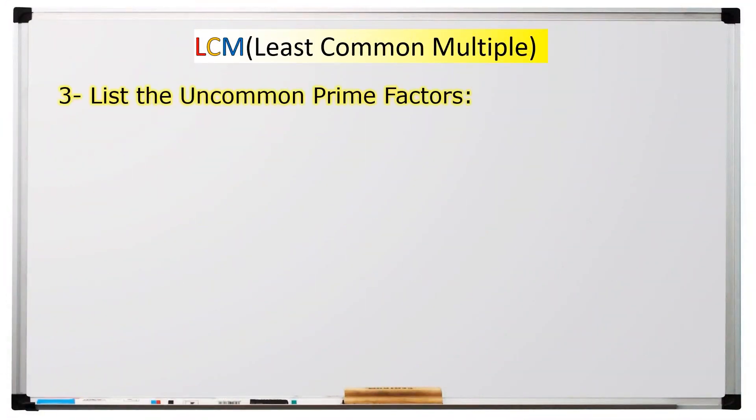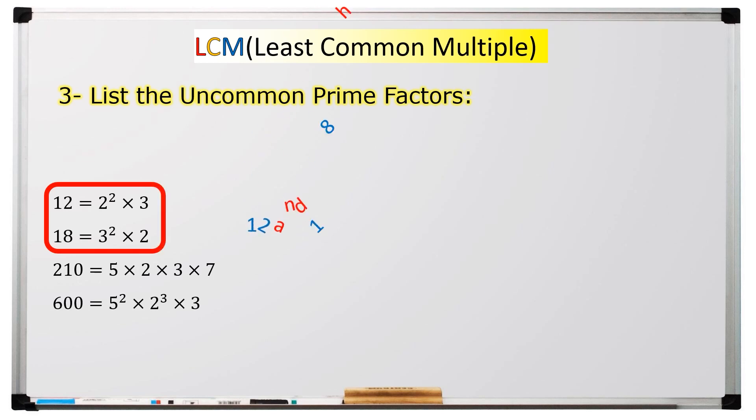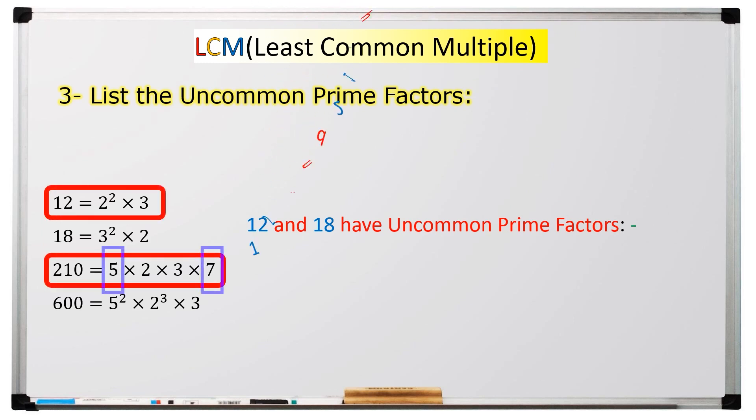The third step involves listing the uncommon prime factors. In this step, we should choose the prime factors that are not in common. For example, twelve and eighteen have nothing except for two and three, which are common. But two hundred ten has five and seven, in addition to two and three, so we should write five and seven for twelve and two hundred ten.